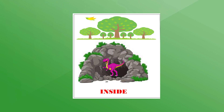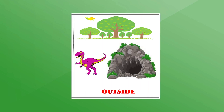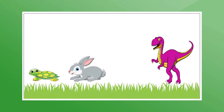Once there was a dinosaur who lived in a deep jungle. He lived in a cave. Look at the dinosaur — he is inside the cave. But then he started to feel hungry, so he decided to go outside the cave to find food. Now you see he is outside the cave. The dinosaur went to the jungle.